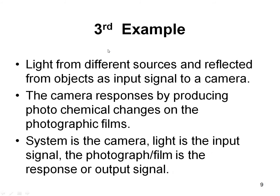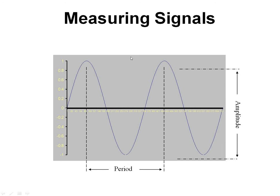The third practical example is a camera which records an input image, processes it, and produces an output image. Here the system is the camera, the light is the input signal, and the photograph on the film is the output signal. So first, how do we represent a signal in graphical or mathematical format? To represent a signal graphically you require an x value and a y value — the x value is the time or independent variable and the y-axis is the dependent variable or amplitude.